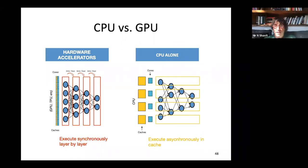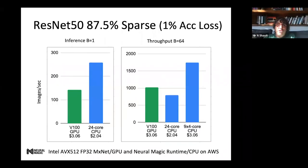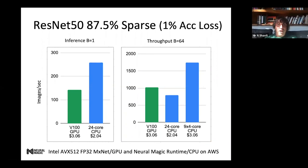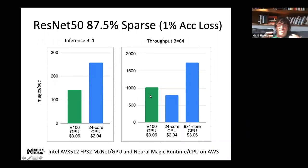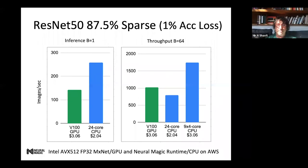This is using essentially sparsity and locality of reference. Here's an example: ResNet-50 sparsified to 87.5%, with less than 1% accuracy loss. A 24-core Intel CPU at $2 is almost twice the performance of a V100 GPU in batch size 1. In batch 64, it's a little less, but if you just execute nine instances, you'll be better than the GPU. Today, Neural Magic software gets to GPU speed of 1000 on a 24-core CPU. Sparsity and locality of reference put together can actually deliver the same kind of performance that GPUs can.